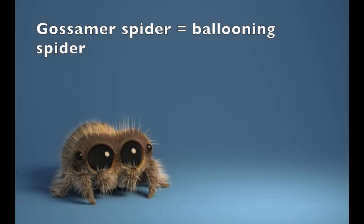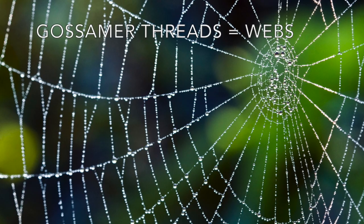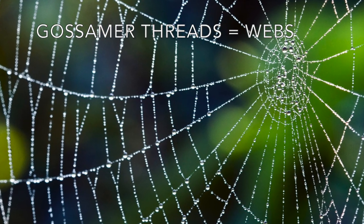Gossamer spider is a term used to define all spiders that take part in the act of ballooning, also called kiting. The name comes from the gossamer threads which the spider releases to achieve ballooning.